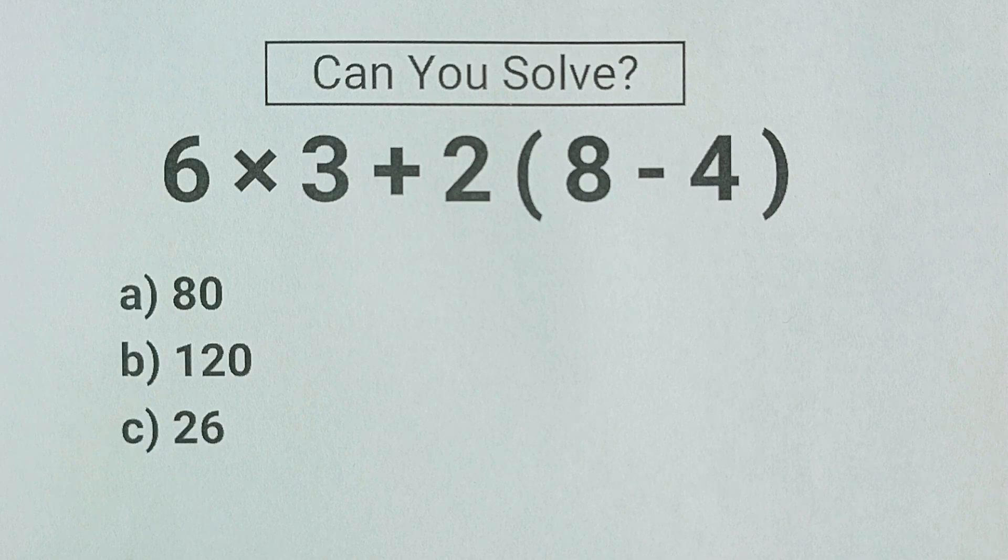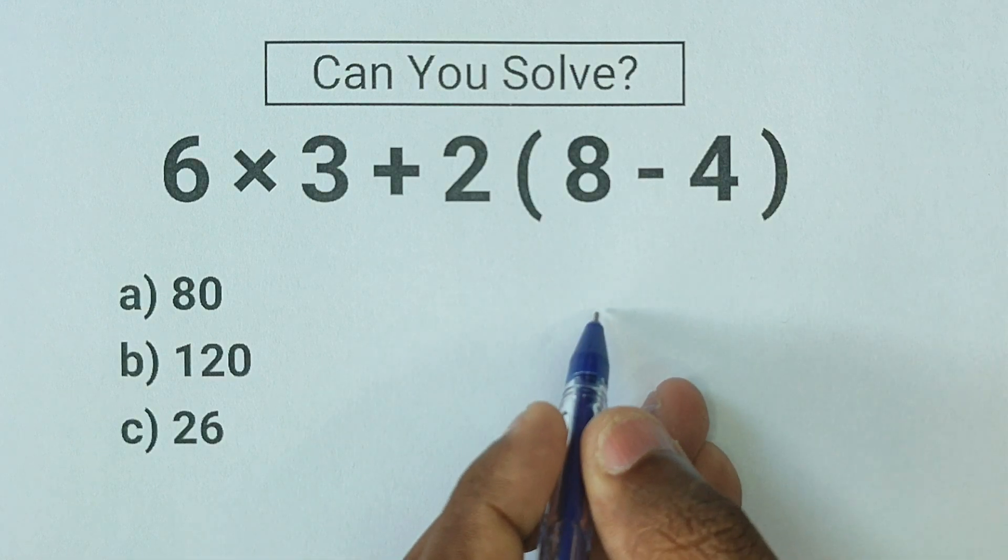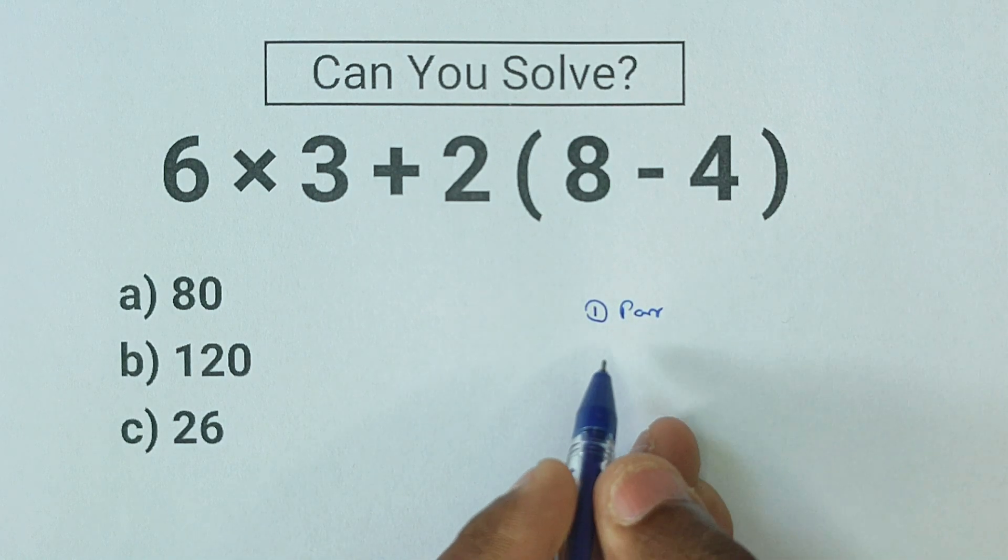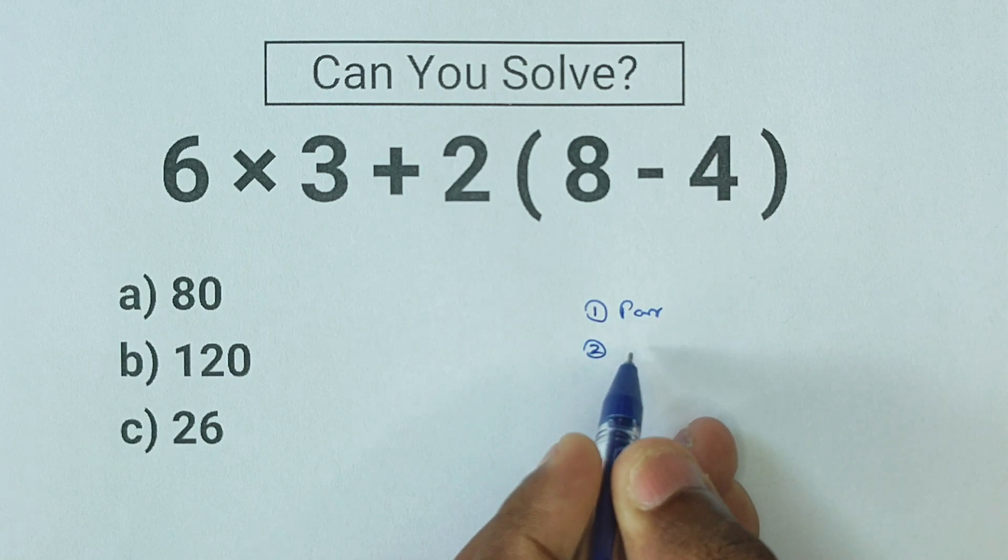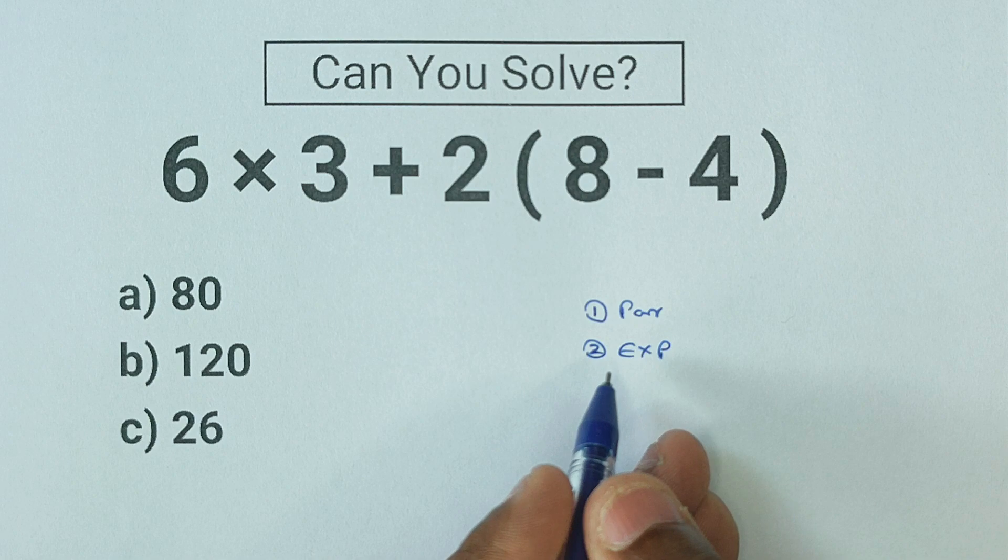I am going to solve this problem now. You should know order of operations to solve this problem. The first on our list is parentheses - the first thing we must do is get rid of the parentheses. Second on our list is exponents. If you don't know what an exponent is, don't worry about it.